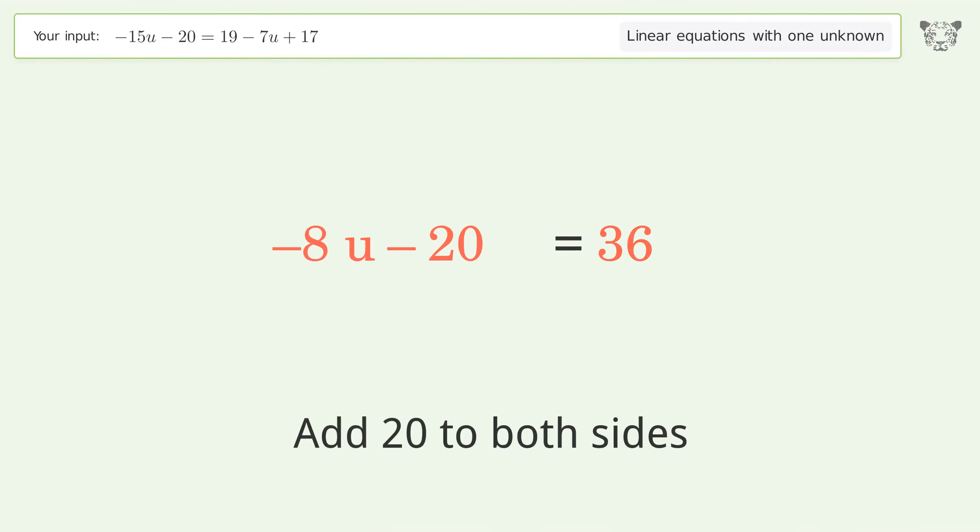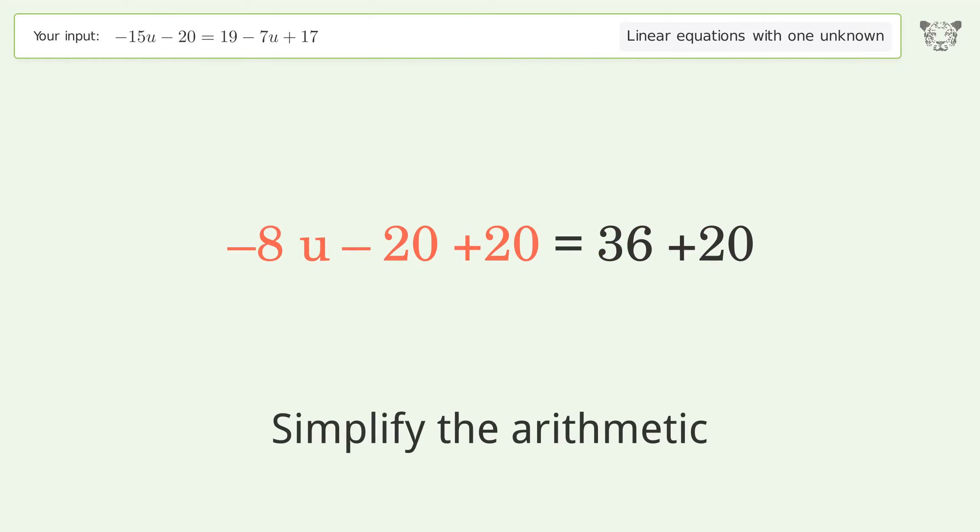Group all constants on the right side of the equation. Add 20 to both sides. Simplify the arithmetic.